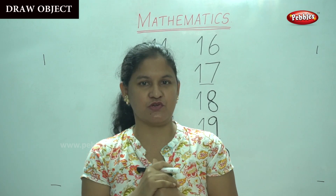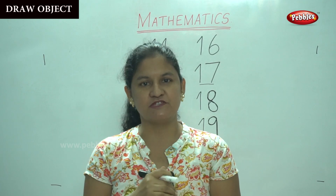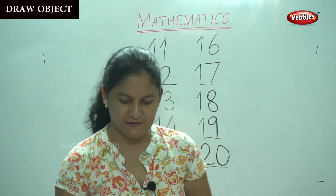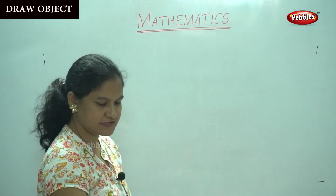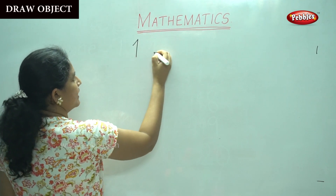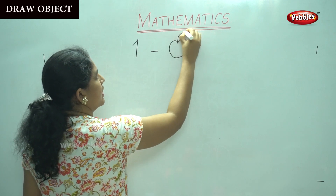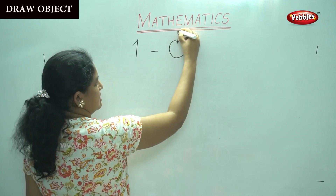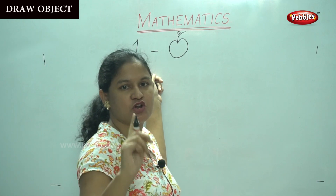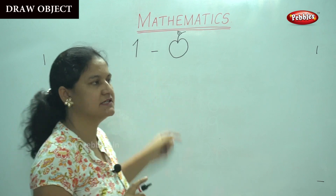Now, I'm going to show you how to draw the number of objects for each number. So, shall we start with number 1, children? For number 1, we will be drawing an apple. So, how many apples will we draw for number 1? For number 1, you will only draw one apple or one object.